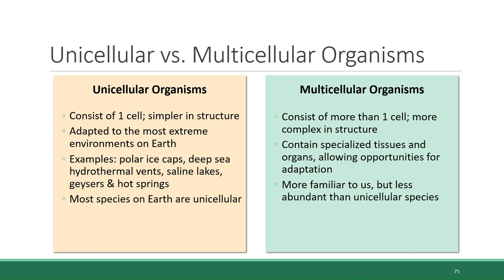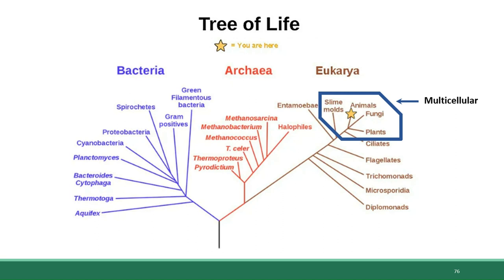Multicellular organisms may be more familiar to us because they're not microscopic — we can see them, we can interact with them. But in terms of species diversity, they are less abundant than unicellular species. To give you a sense of this difference in diversity and abundance, we can look at how unicellular and multicellular organisms are positioned on the tree of life. Within this figure, multicellular life is entirely encompassed within the blue box.